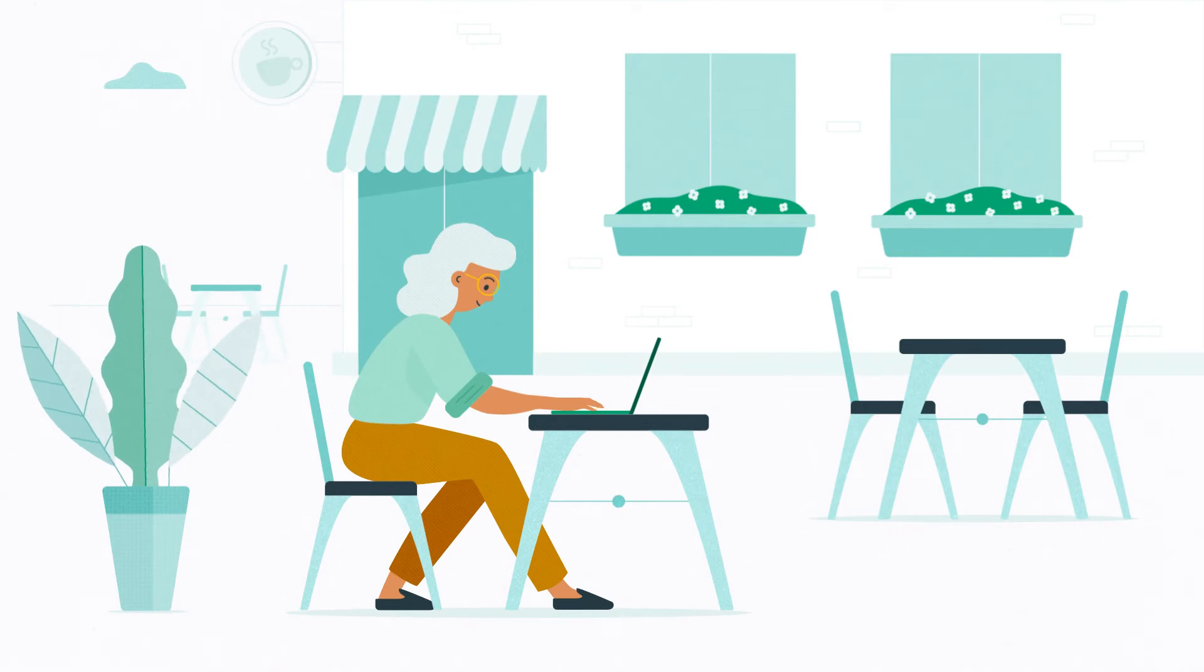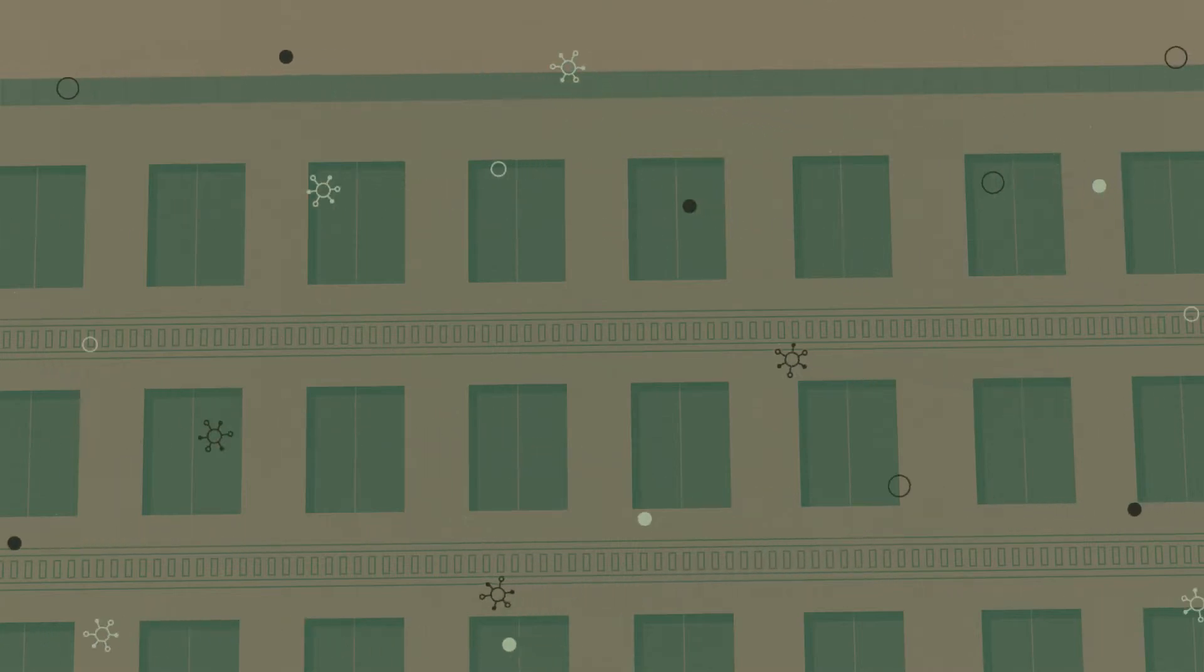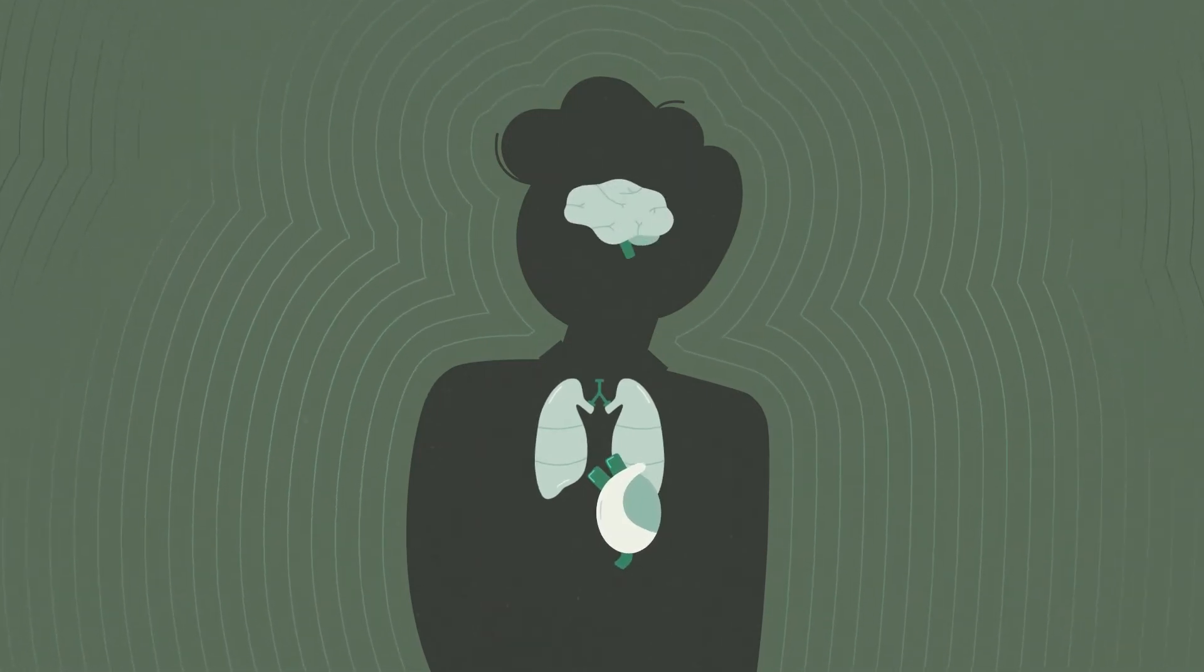But there are some things we can't see, things that are harmful to our health. Invisible pollution moves through the air, traveling downwind, damaging our lungs, hearts, and even impacting our brains.